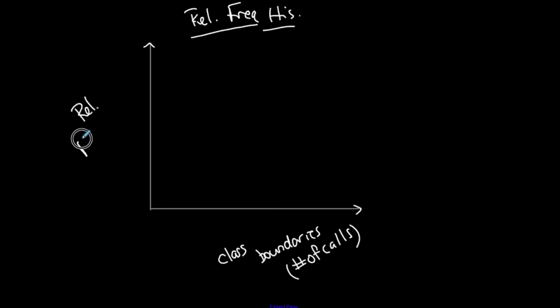The horizontal axis should be either class midpoints or class boundaries. So just to show you the difference between what it looks like when you use class midpoints and class boundaries. In this case, I'll use class boundaries. And again, it represents the number of calls. But the height here, because it's a relative frequency histogram, the height now represents relative frequency.